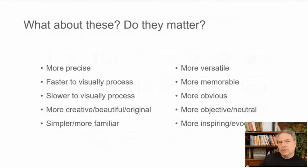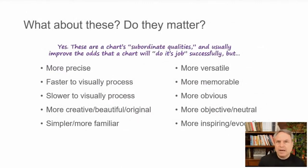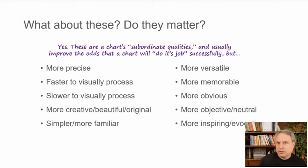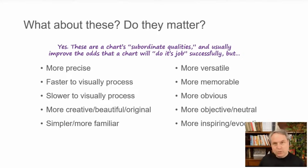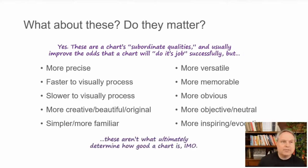So if that's what I consider a good chart, what about those other definitions? Do they matter? Yes, it still matters how precise the chart is, how quickly it can be visually processed, or how memorable it is. But I call these subordinate qualities — qualities that a chart can have that increase its odds of doing its job. For example, if a chart is more obvious, it's also perhaps going to be more persuasive, if persuasion is the ultimate job of the chart. These are not, however, what ultimately determine how good a chart is. What ultimately determines that is: does it do its job?